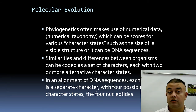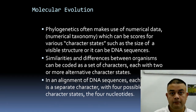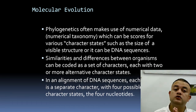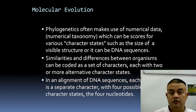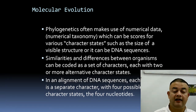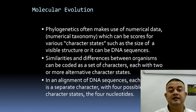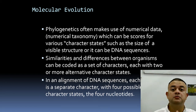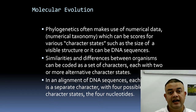Molecular evolution is very important for molecular systematics. We study molecular evolution to examine the process and theory of evolution. Phylogenetics uses numerical data — like numerical taxonomy — which can be scored for various character states: size of a visible structure, DNA sequence, or presence/absence of traits. The biggest advantage of DNA sequences is that they are unambiguous — only four possible states at each position: A, T, G, or C.